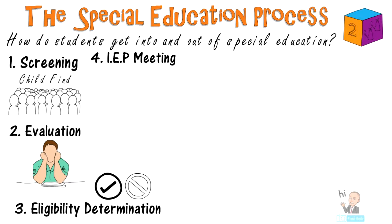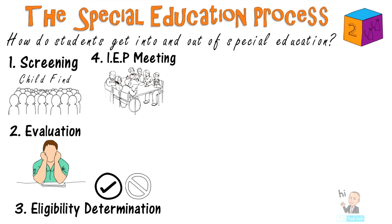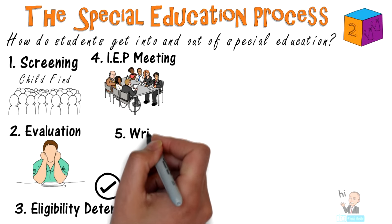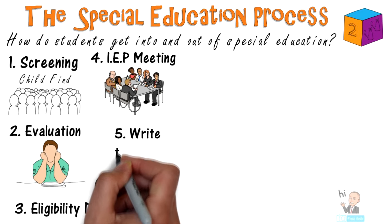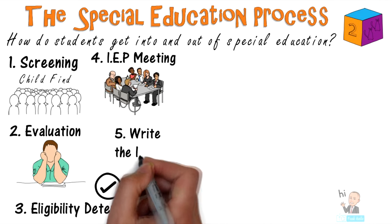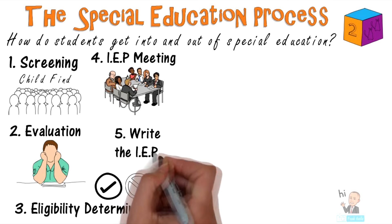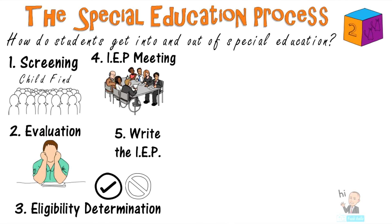If a child is eligible, the next step is the IEP meeting. An IEP meeting is scheduled and the parent is invited. At the meeting, they discuss the best possible way to meet the student's needs. After the meeting, the IEP must be written and finalized.